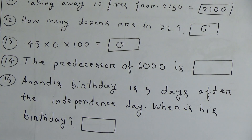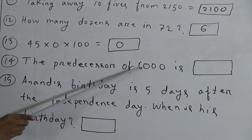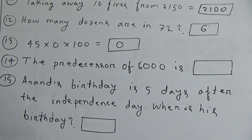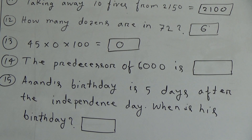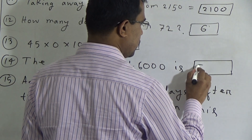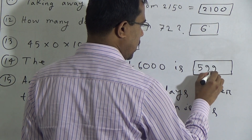Fourteenth question: the predecessor of 6000. Predecessor means the previous number. The previous number of 6000 — if we subtract 1 from 6000, we can get it. We know that the previous number of 6000 is 5999. So the answer will be 5999.